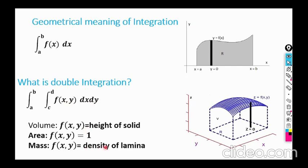The same double integral can also represent the mass of a lamina. A lamina is a region with very negligible thickness, like a page of a notebook. If f(x,y) represents the density of that lamina, then the double integral of f(x,y) dx dy gives the mass of the lamina. For uniform density, mass equals density times area. But here the density can be variable — a function of x and y — so we use the double integral when density is not constant.